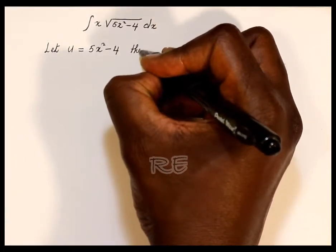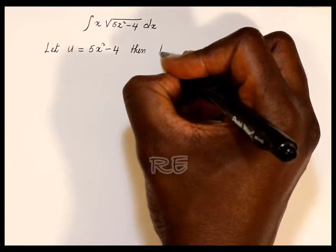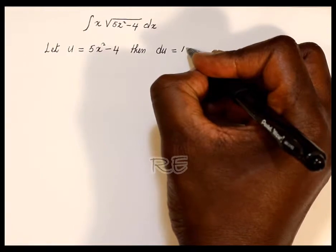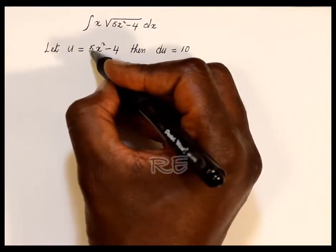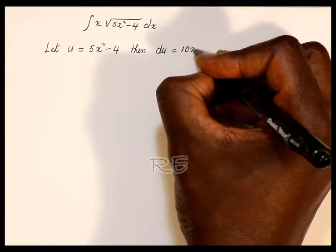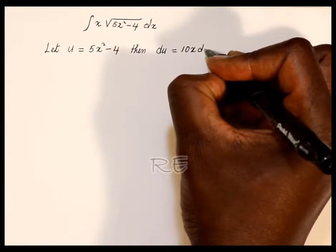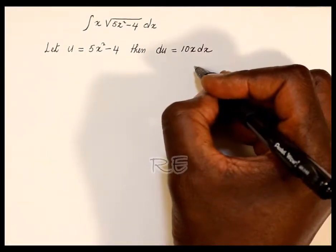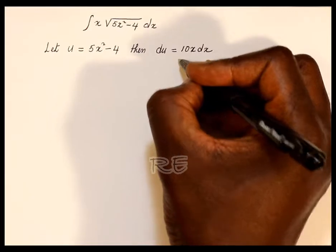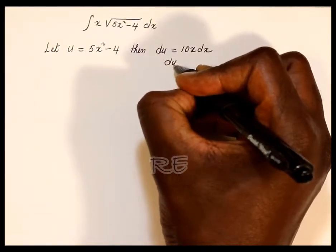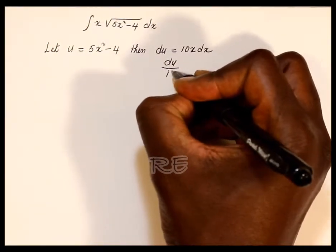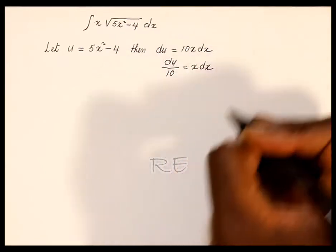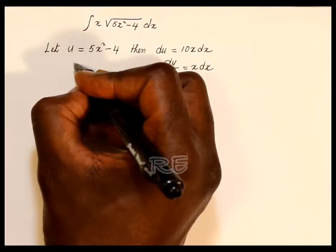And du will be the derivative. Then du will be 2 times 5, which is 10. So it's 10x to the 2 minus 1, so it's 10x dx. Since we have x dx in the integrand, we're going to divide by 10 on both sides. So du divided by 10 is equal to x dx. That way we have all the parts to substitute.